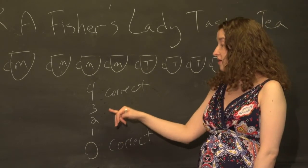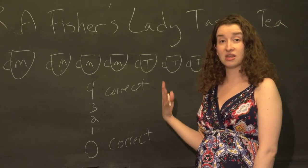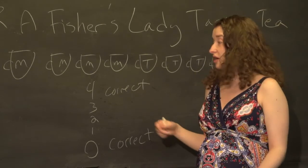Or we should be able to figure out the probability that any of these numbers of correct cups was the number she actually drew, assuming that she's doing it randomly.